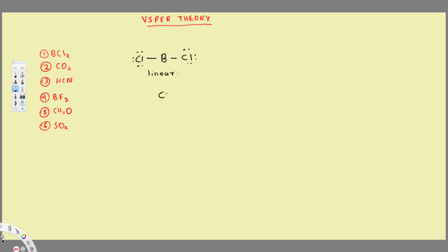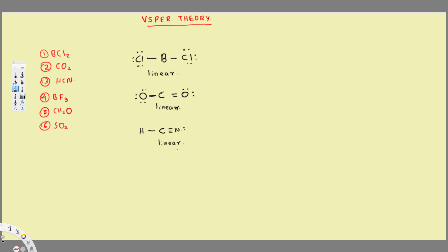The second example also has two atoms around the central atom, so it's also going to be linear. For CO₂, we have a double-bond O with four electrons and a single-bond O with six electrons — and it's linear. Same thing for HCN: the central carbon has two atoms around it, so it's also linear. Carbon has a triple bond to N and a single bond to hydrogen, and hydrogen can only have two electrons.